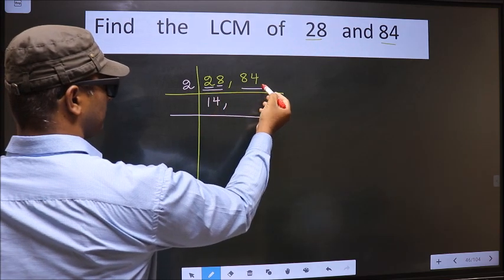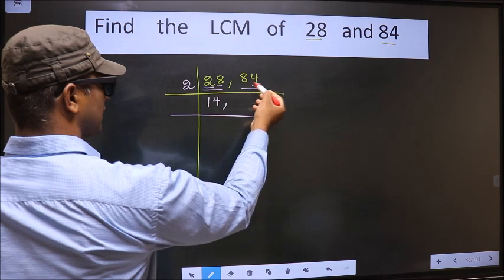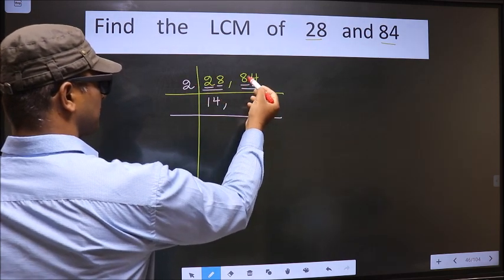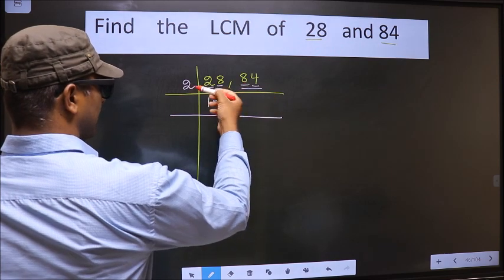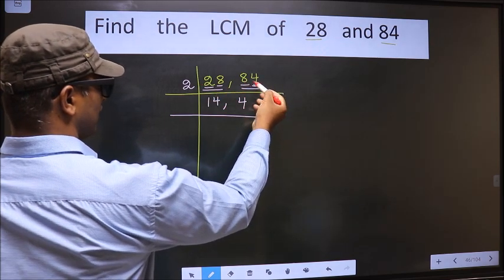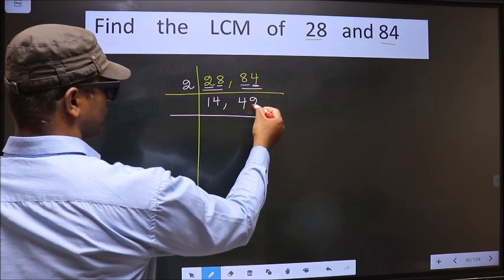The other number 84. Last digit 4, even. So this number is divisible by 2. First number 8. When do we get 8 in the 2 table? 2 fours, 8. The other number 4. When do we get 4 in the 2 table? 2 twos, 4.